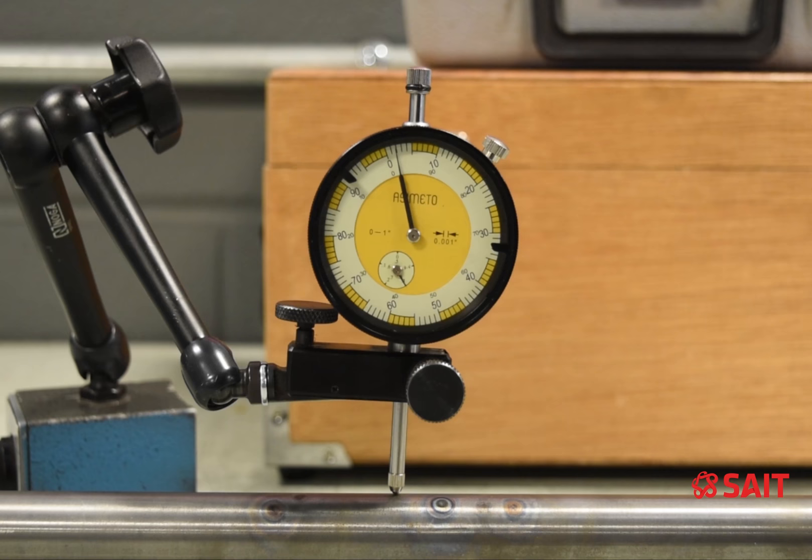I've heated the shaft about five times, a couple little spots on each side, and I've reduced it down to just over a thou, a thou and a half or so. If I continue to heat it up, I'll end up straightening the shaft even more.